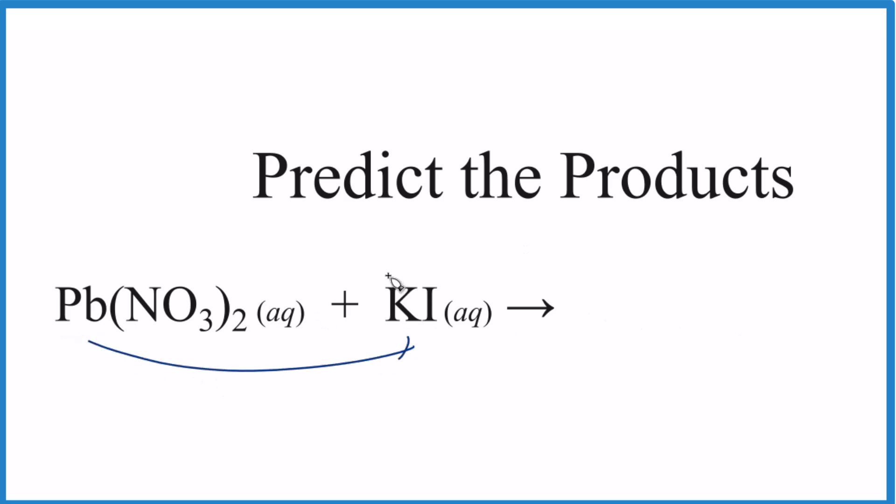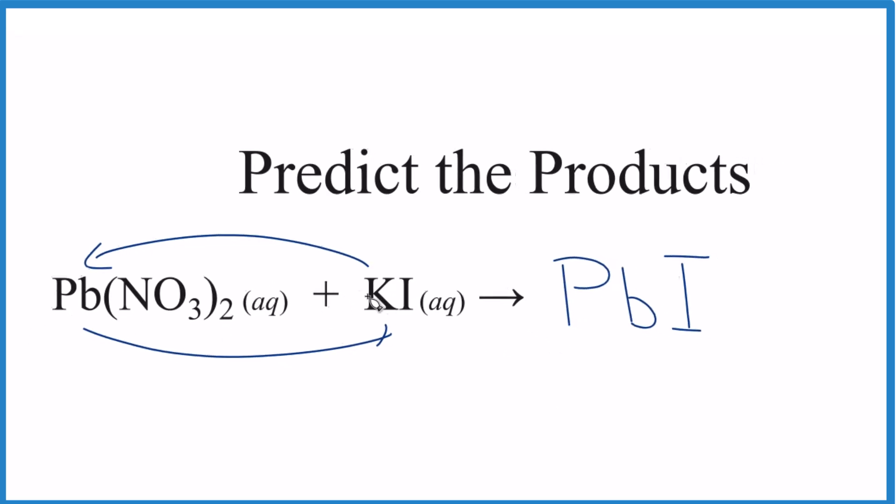Here the lead and the potassium, they're just going to switch places. So we'll end up with PbI and then KNO3.